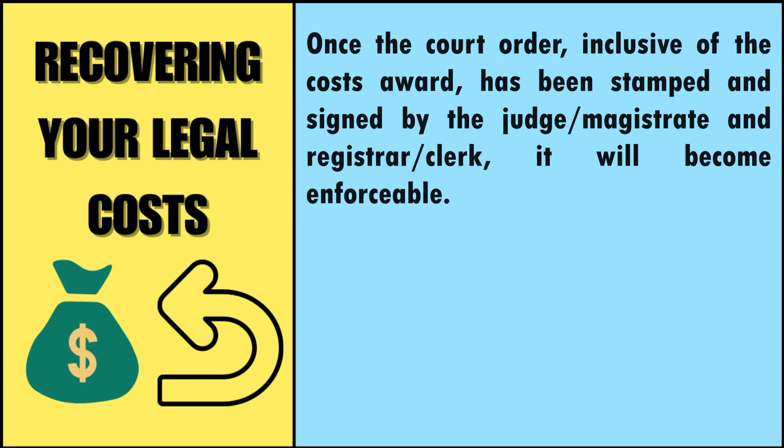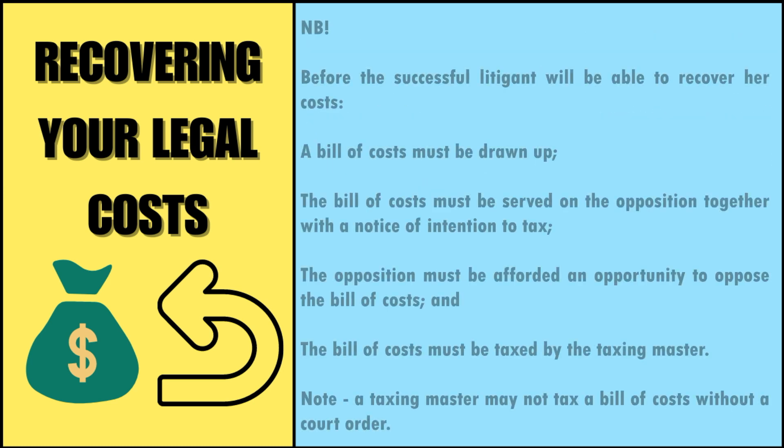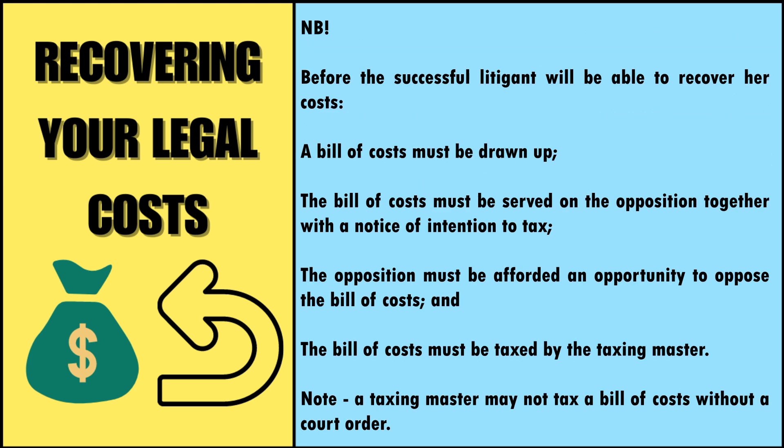Once the court order, inclusive of the cost award, has been stamped and signed by the judge or magistrate and registrar or clerk, it will become enforceable. As a starting point, before the successful litigant will be able to recover her costs, the following must take place: a bill of costs must be drawn up, the bill of costs must be served on the opposition together with the notice of intention to tax, the opposition must be afforded an opportunity to oppose the bill of costs, and the bill of costs must be taxed by the taxing master.